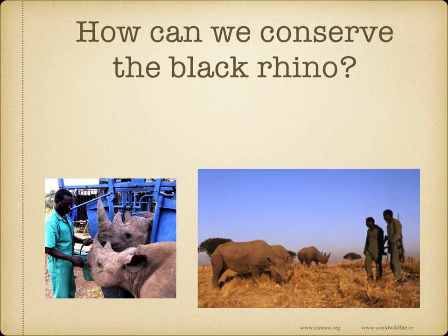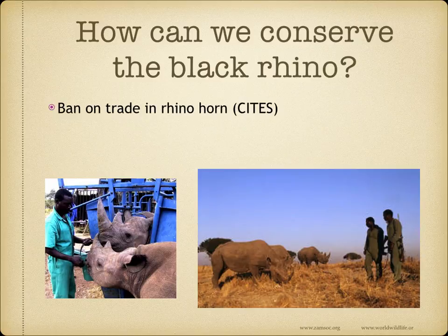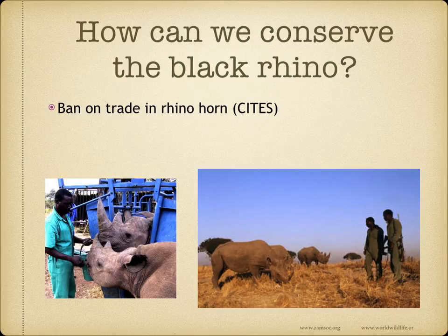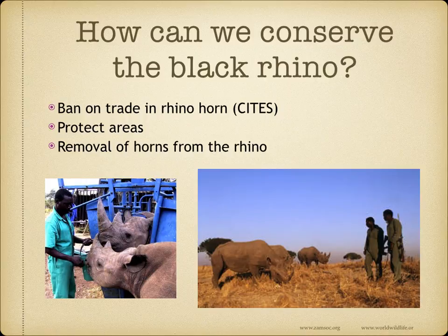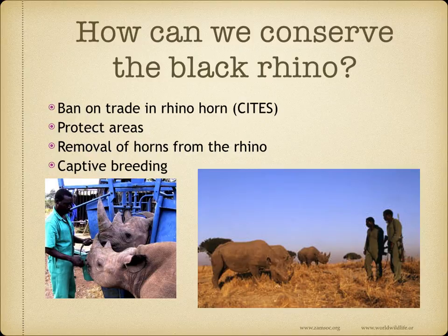So how can we conserve the black rhino? To prevent extinction and increase population numbers, several conservation measures have been put in place. These include a ban on trade in rhino horn, implemented by CITES — the Convention on International Trade in Endangered Species. Protected areas where black rhinos live in parks and reserves alongside other endangered species such as elephants, patrolled by armed guards. Removal of the horns of rhinos so there is no incentive for poachers to shoot them. And captive breeding, where young rhinos are raised in reserves and zoos and then reintroduced back into the wild.